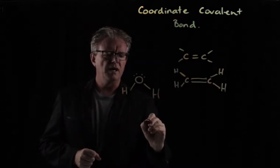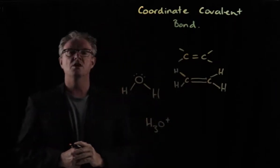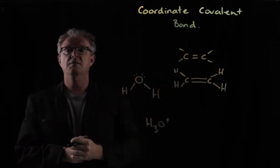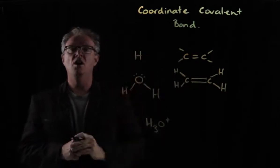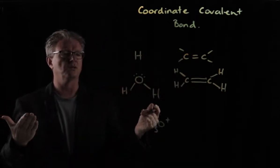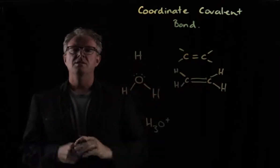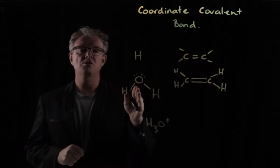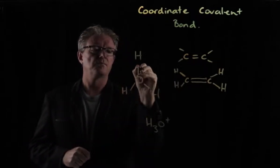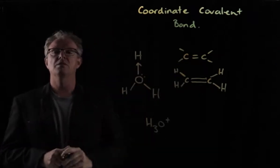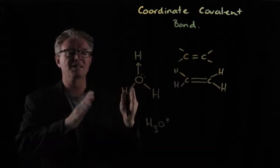However, what about when we have the hydronium ion? So the hydronium ion forms when another hydrogen comes in. However, it's not a hydrogen atom, it's a hydrogen ion. So in other words, a single proton. So we've got no electron here to form a bond. So in this instance, two electrons from the oxygen will go and make a covalent bond.